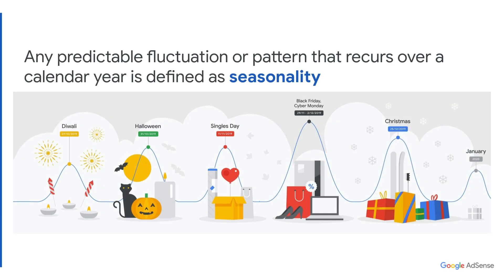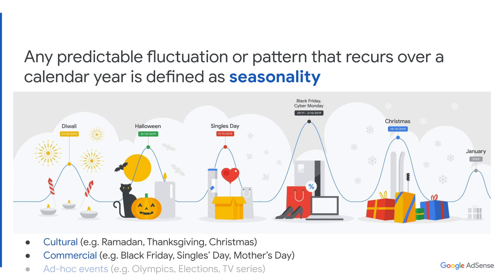So what is seasonality? Any predictable fluctuation or pattern that recurs over the calendar year is defined as seasonality. It can be categorized into three types of events and holidays that are cultural, commercial, and ad hoc. By spotting these events and holidays that impact your audience, you can identify your opportunity to increase revenue and attract new users.